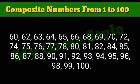91, 92, 93, 94, 95, 96, 98, 99, 100. These are the composite numbers from 1 to 100.